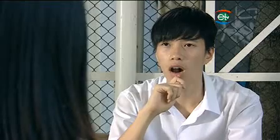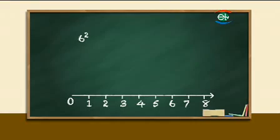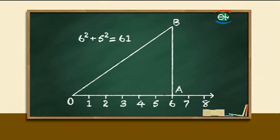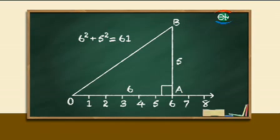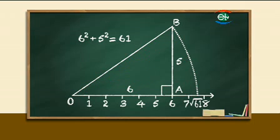Let's see if you understand how to mark √61 on the number line. 61 is a two-digit number — we need two numbers whose squares sum to 61. Since 6² + 5² = 36 + 25 = 61, we draw a right angled triangle with OA = 6 and AB = 5. Then draw an arc with O as center and OB as radius. We can find the position of √61 on the number line.